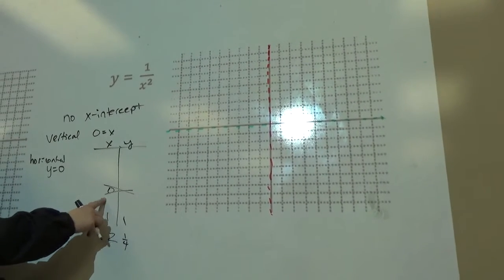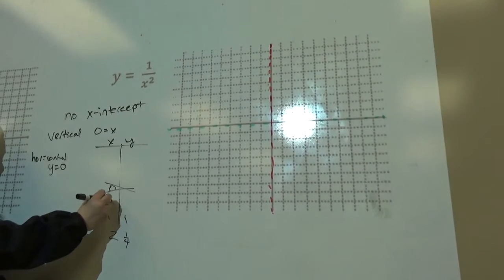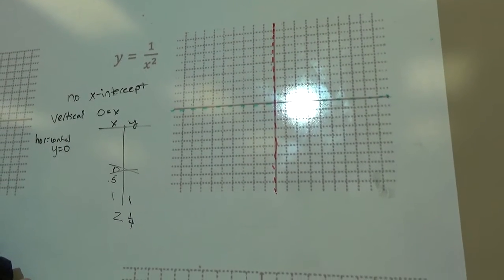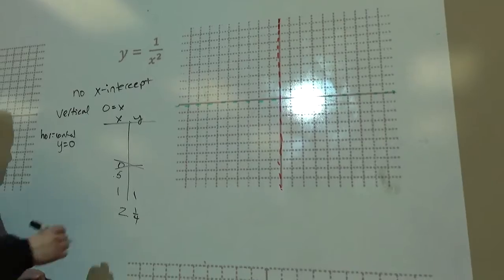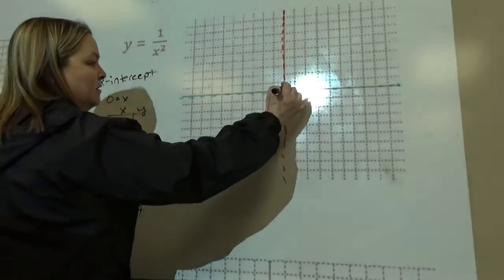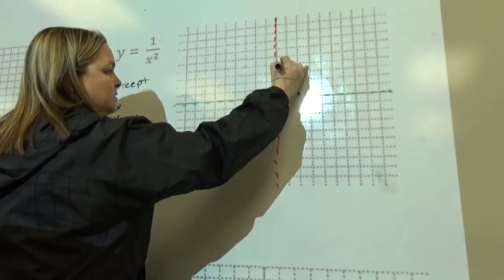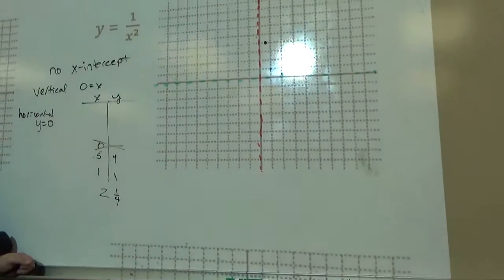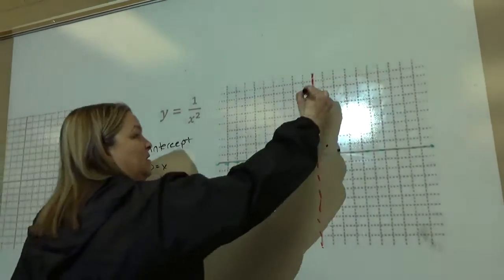But I want to try some between zero and one, like point five. What was point five? Four? So it's looking like that. So now you can get a pretty good idea of what that side of the graph looks like. So I'm going to go ahead and draw that in.